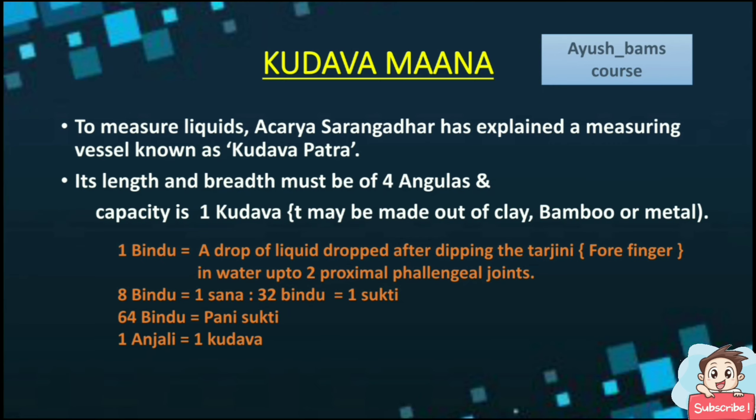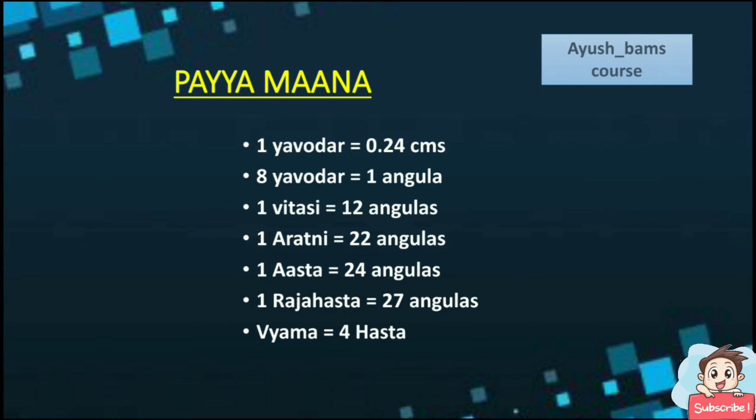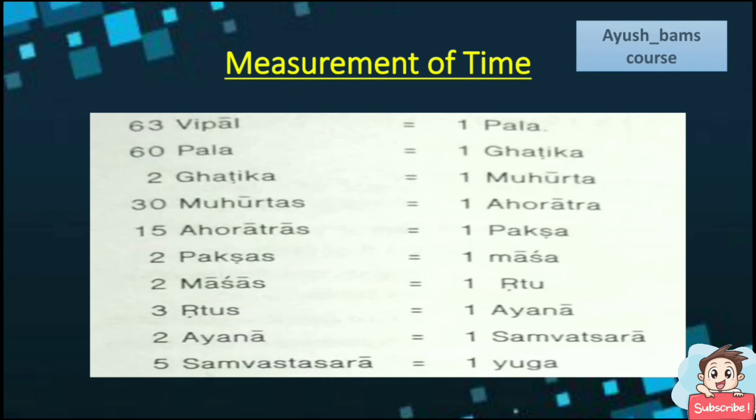Payamana — length measurements: 1 Yavodar equals 0.24 cm. 8 Yavodar equals 1 Angula. 1 Vitasi equals 12 Angulas. 1 Arathni equals 22 Angulas. 1 Aasta equals 24 Angulas. 1 Rajahasta equals 27 Angulas. Vyama equals 4 Hastha.